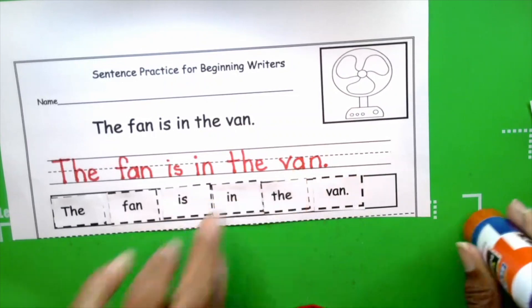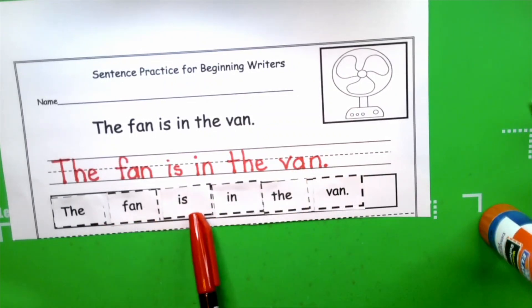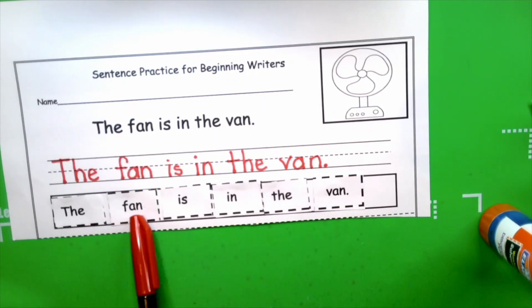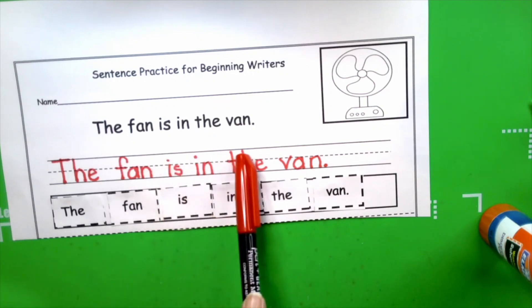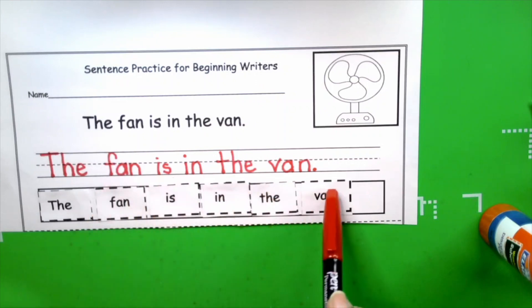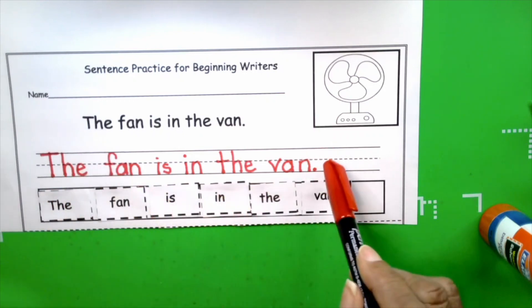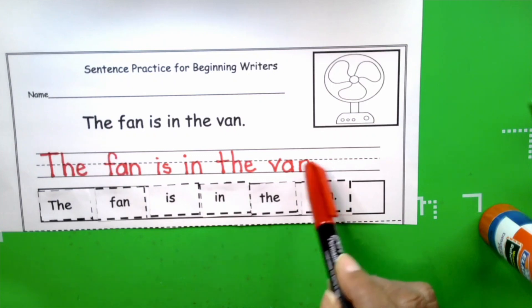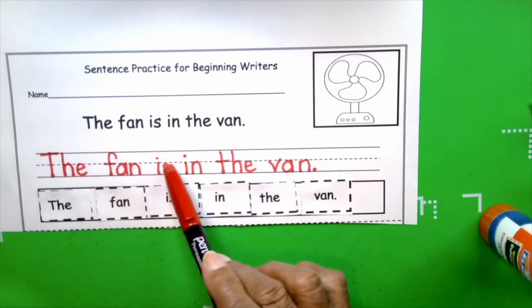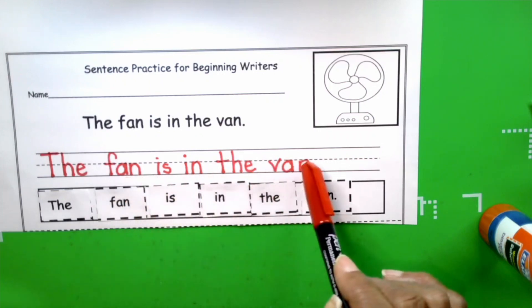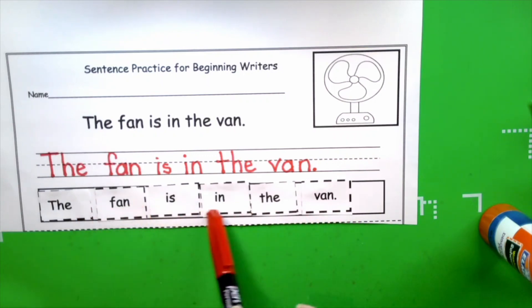And there we have it. The fan is in the van. Your turn. Very good, boys and girls. We use our sight words and words to know to write the sentence. We started the sentence with the uppercase letter, and we ended the sentence with a period. The sentence has one, two, three, four, five, six words. Then we cut out our word tiles, and we built the sentence in order.